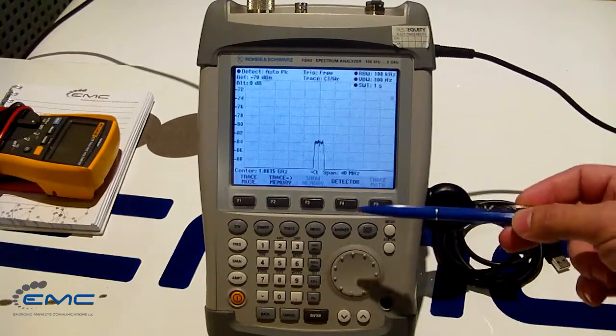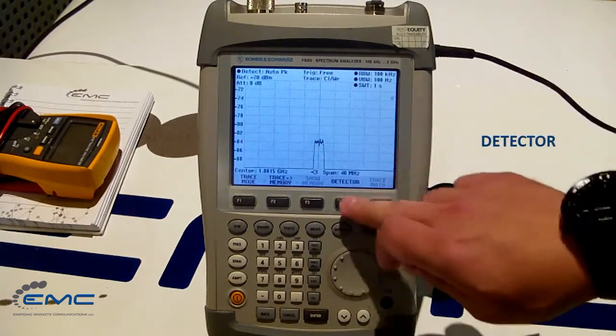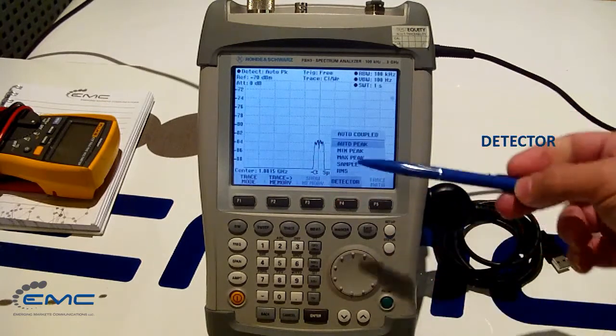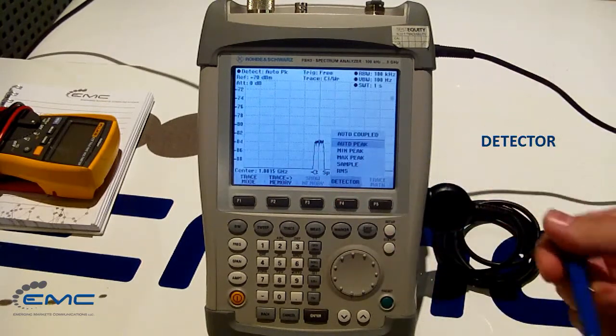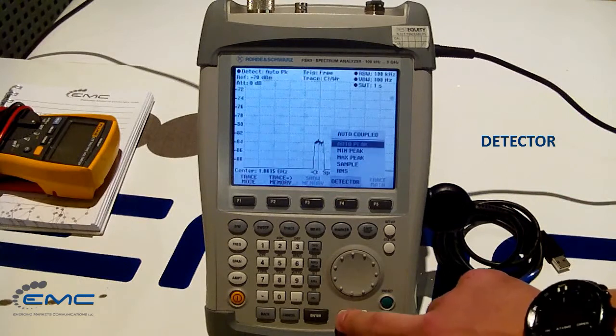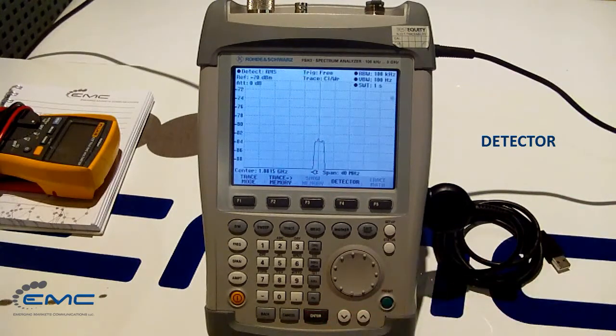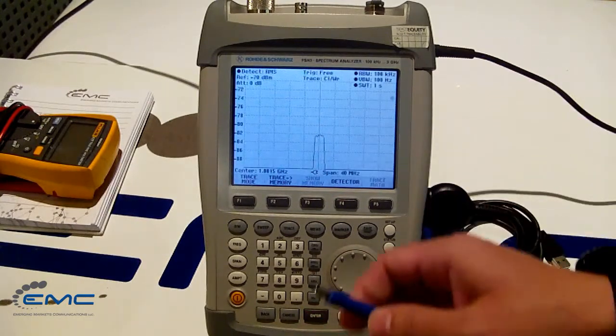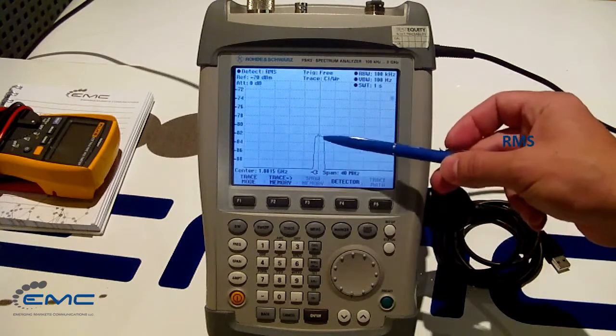From the trace menu, you should also check detector settings. Normally it's set to auto as well. Let's set it to root mean square, like here.